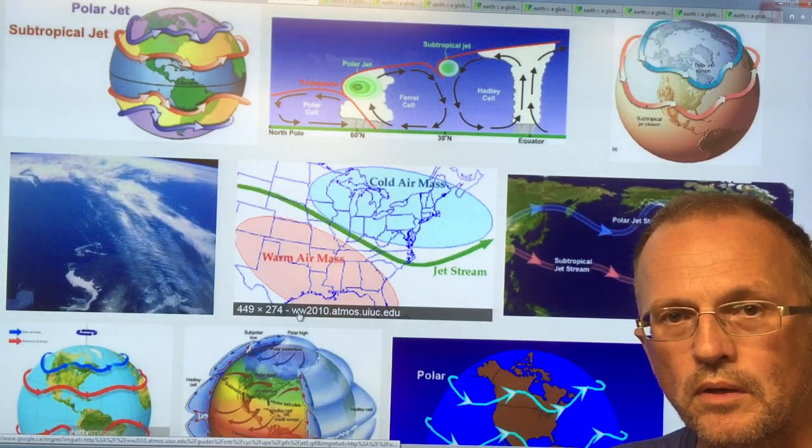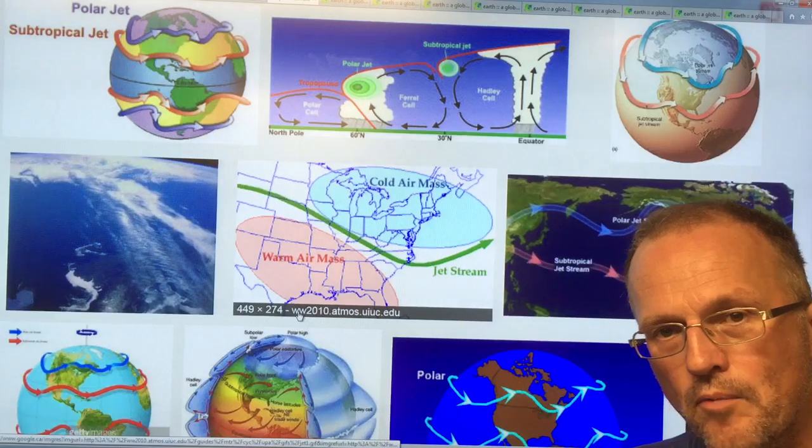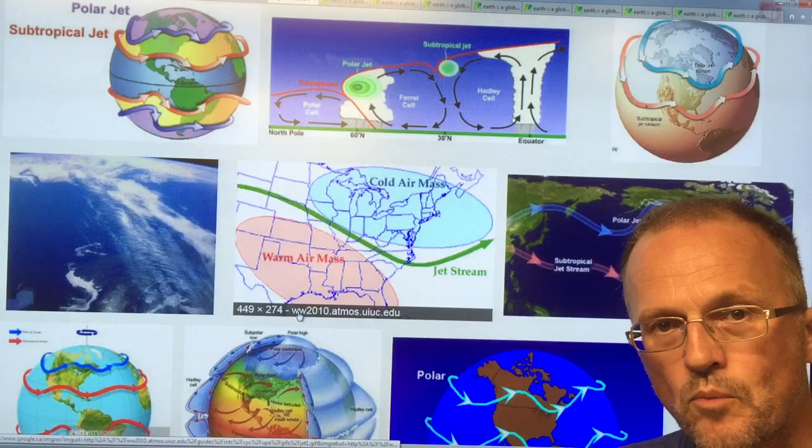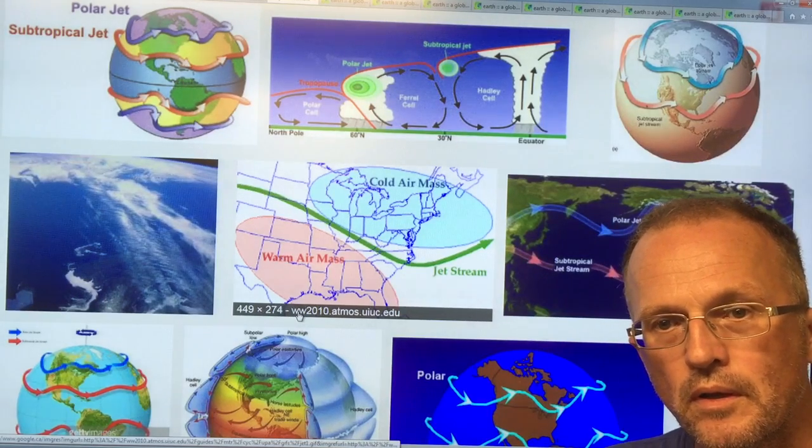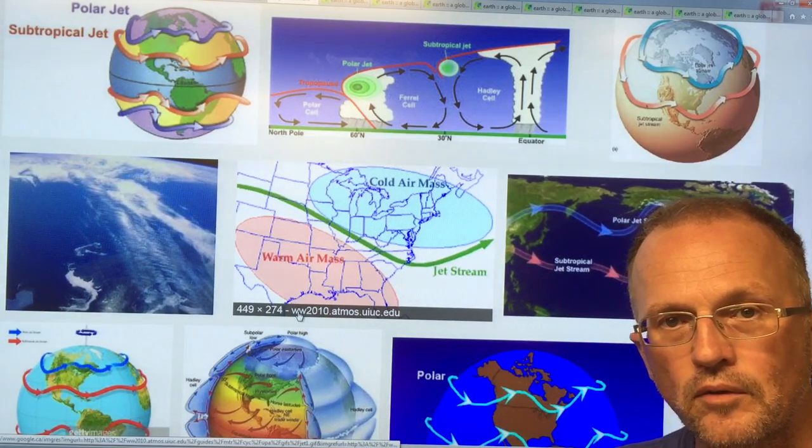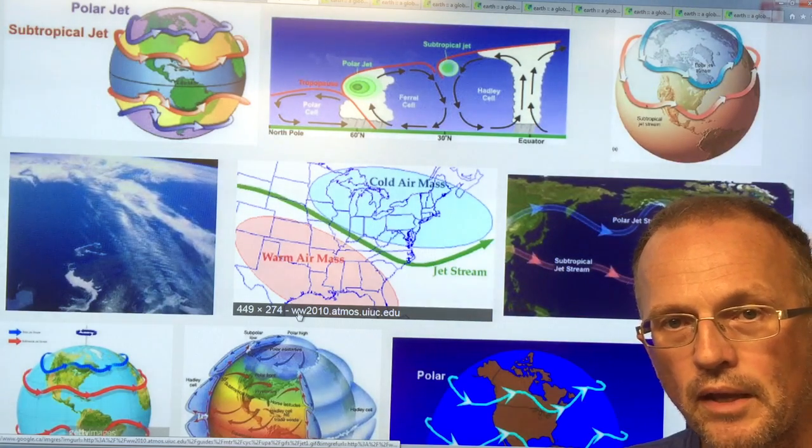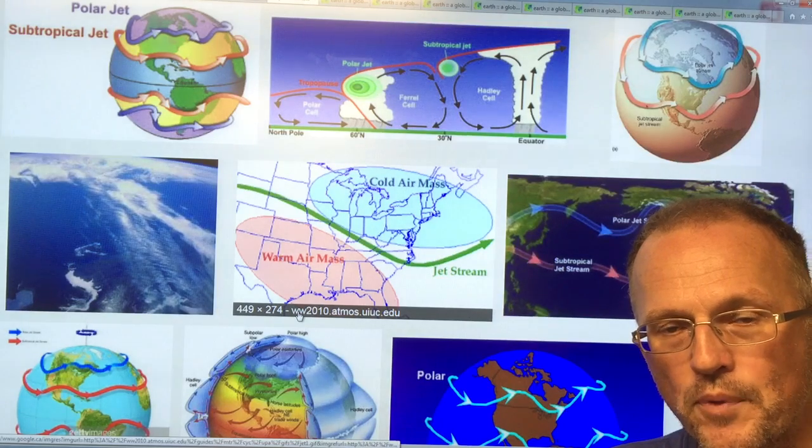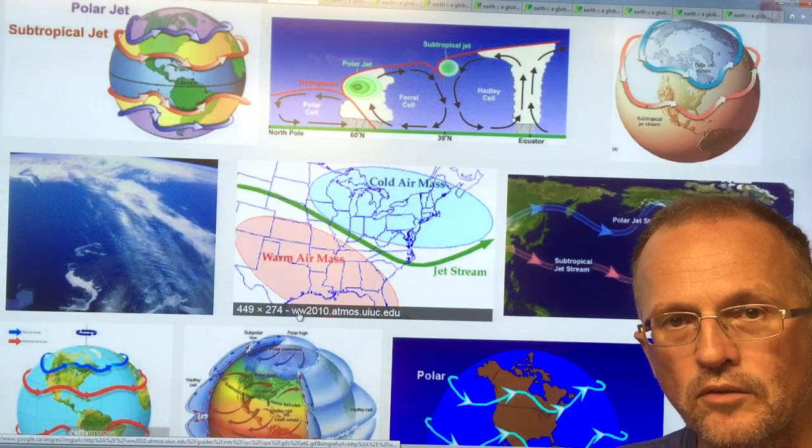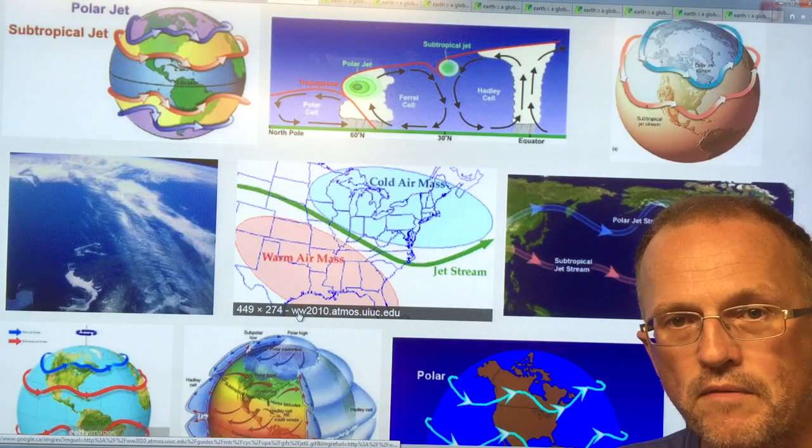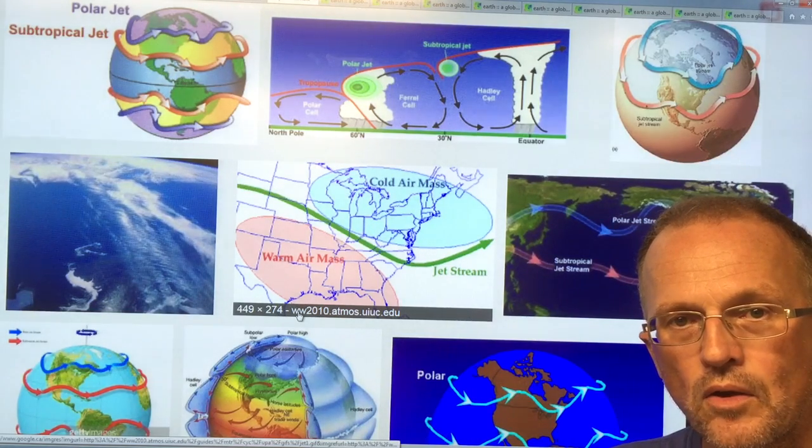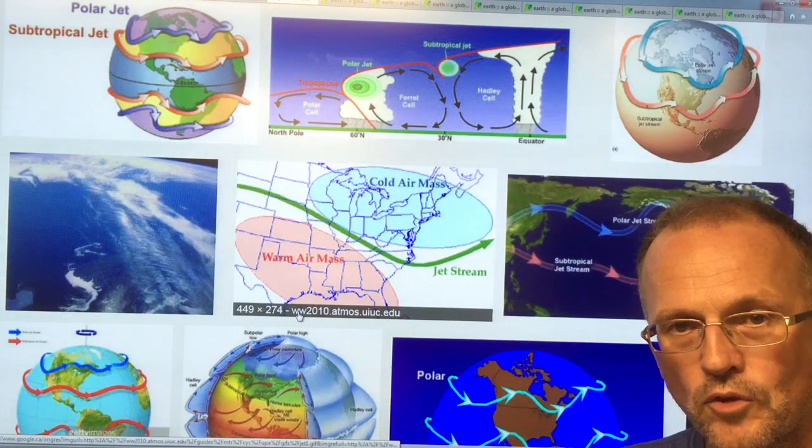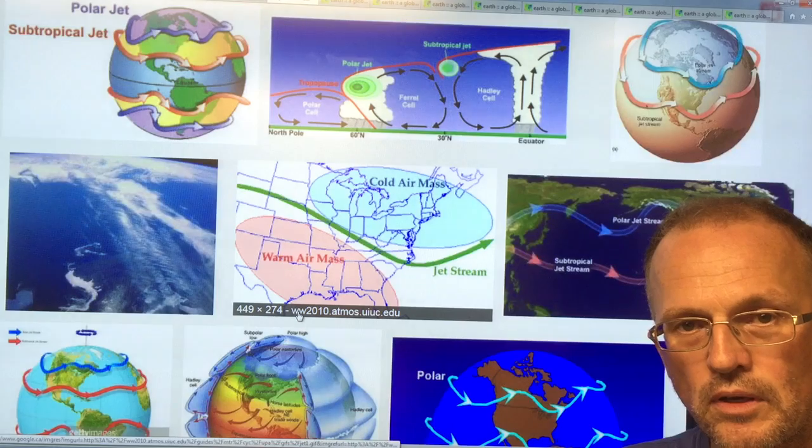Extreme weather events have been accelerating rapidly around the world in terms of frequency, so they're happening more often. One in a thousand year events that happen multiple times in the space of a decade is a good example. The severity is increasing of these events, so we're getting torrential rain events leading to flooding or the water that normally would have been transported elsewhere is not going there, so we're getting droughts in other places.